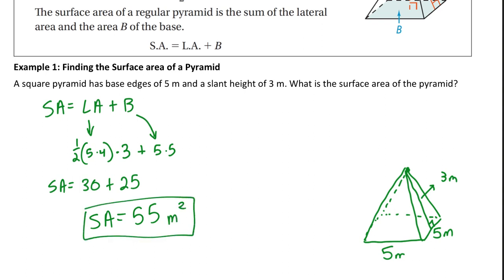Another way to think about this: find the area of one lateral face, which is one half times 3 times 5, and multiply it by the four congruent triangles. You'll notice that also gives exactly 30 for the lateral area. Since it's a square base it has four sides, meaning four congruent triangles, so find the area of one triangle and multiply by four.